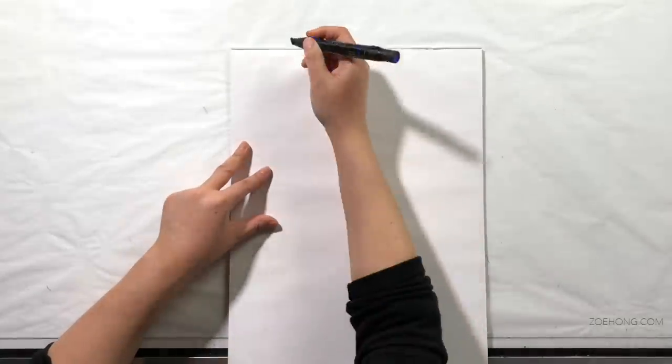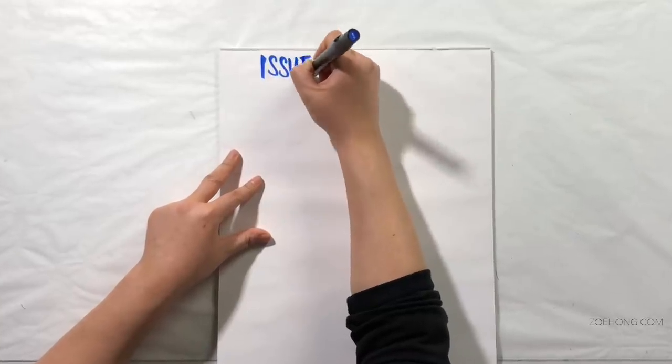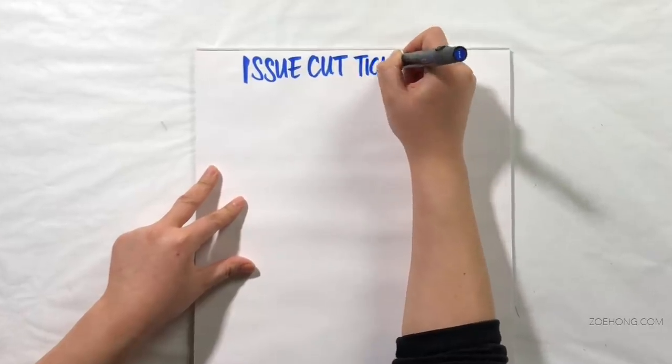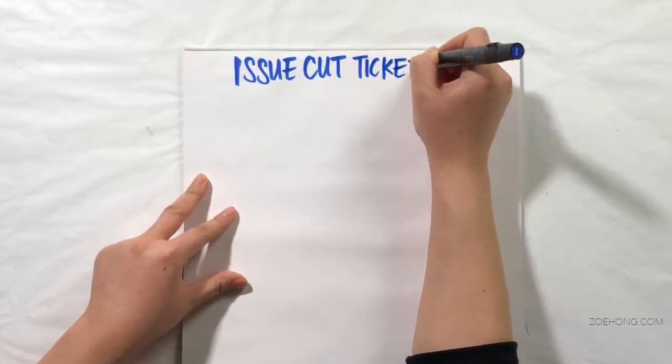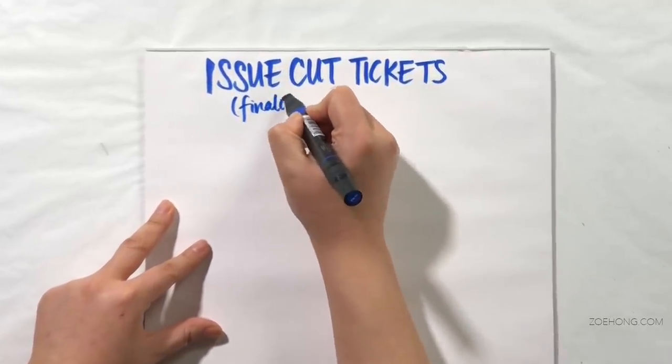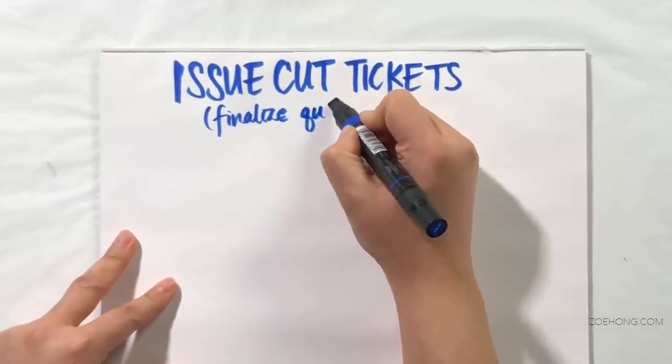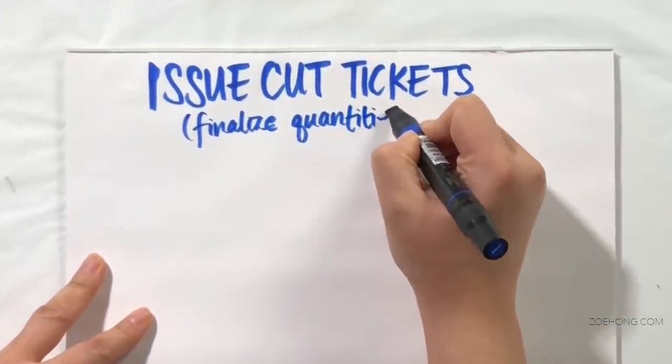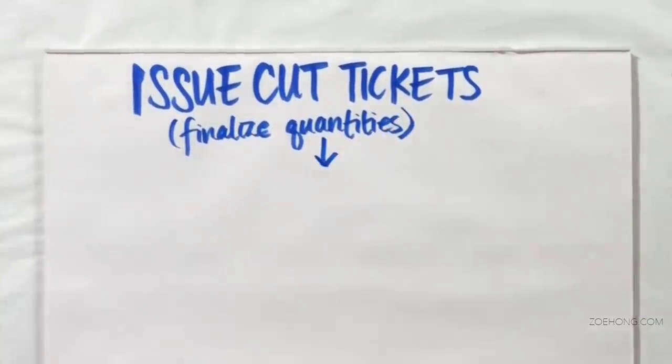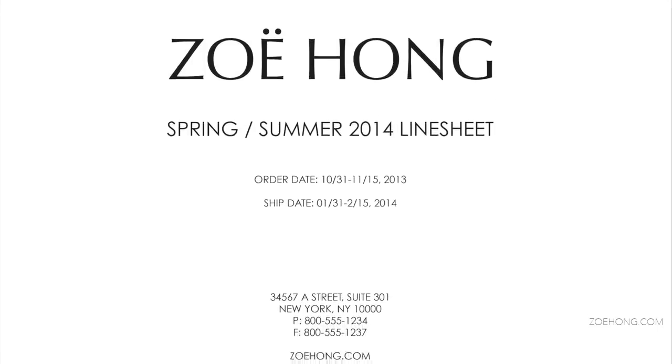Step one, issue cut tickets. And yes, in this video, I'm going to be going in sequential order of the supply chain. Issue cut tickets. Basically, you finalize the quantities you want to produce of every style for each colorway for each size. If you are pursuing the wholesale route, you cut based on your orders from stores. This is why on all your sales materials, you post an ordering deadline. You tell all the stores they have to order by a specific date so you can compile all your order totals and start production on time.